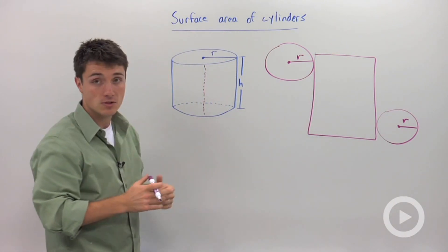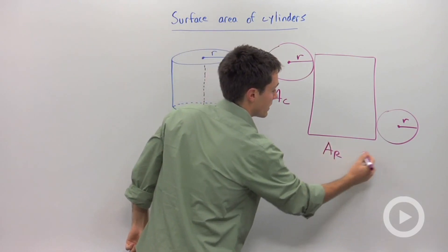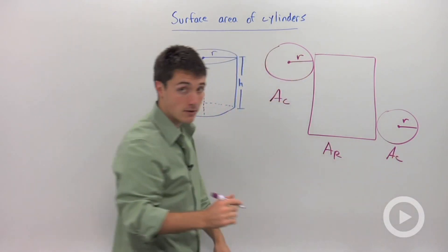So in order to calculate the surface area, you're going to need to add up the area of this circle, the area of this rectangle, and the area of that other circle.